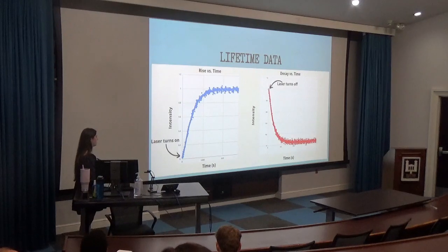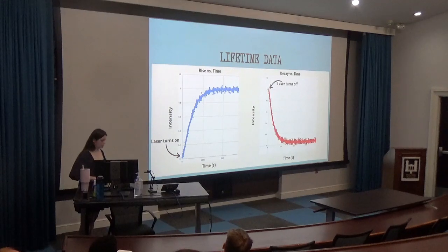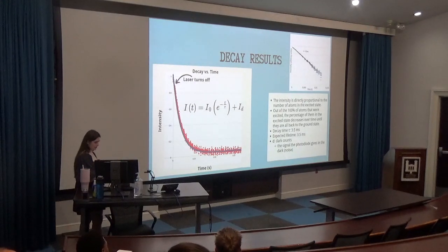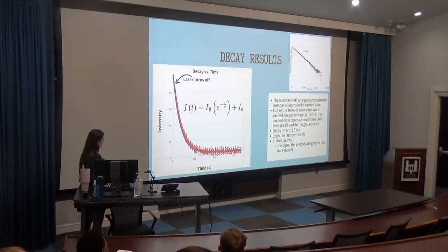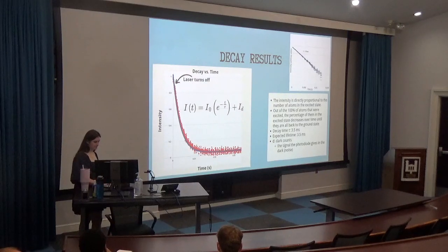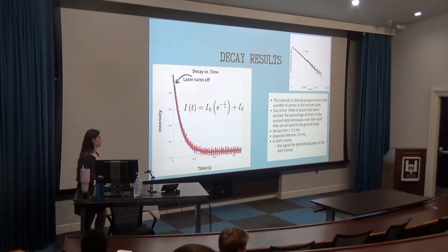We're going to look at the rise and decay separately, using the same graph with the two sides split. We have time on the x-axis, and I've turned the voltage into intensity — it's directly proportional to the voltage, so it's the same graph. Looking at the decay results first, since this is what we're most interested in: we used an exponential equation to model our data, and we were looking for tau, which is the decay time. The ID value is just a signal that the photodiode produced in the dark, which is why our results don't actually go to zero even though the decay has already happened. Our results were super exciting — we found the decay time to be 3.5 milliseconds, which is exactly what we were expecting from all of the literature.